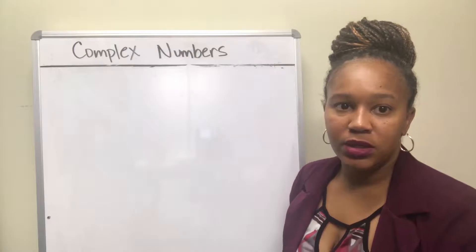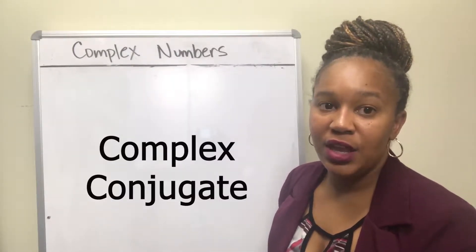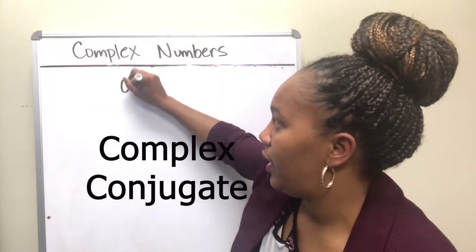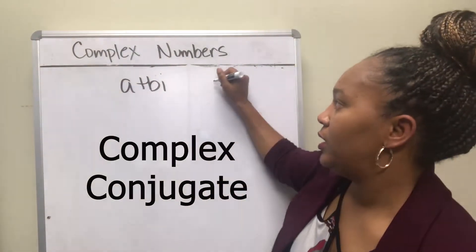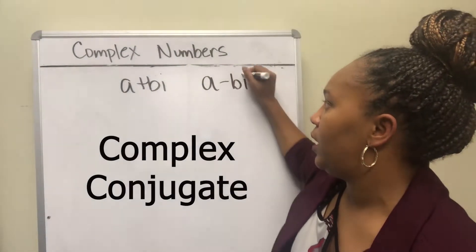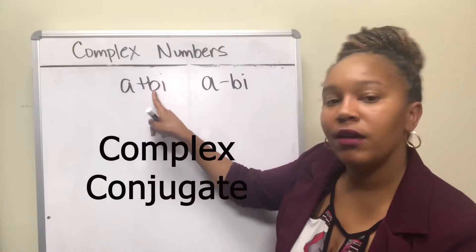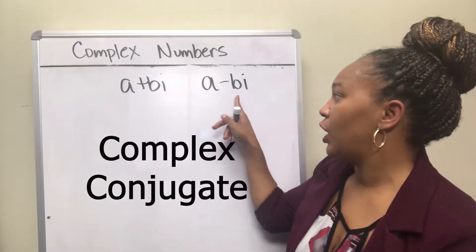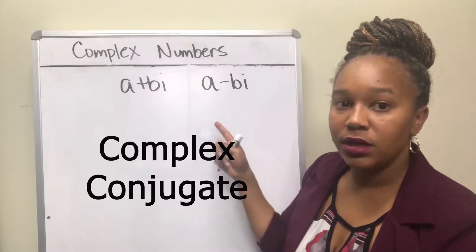In order to divide complex numbers, you have to know what the complex conjugate is. So if I have a standard complex number a plus bi, then the conjugate of a plus bi is going to be a minus bi. All that's happening is you're taking the sign of the imaginary part and you're changing it. So it was once positive, so now it's negative. So that's the complex conjugate.